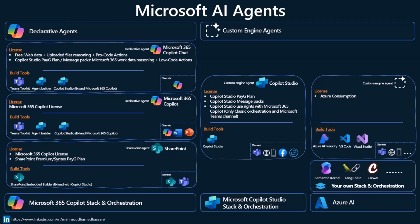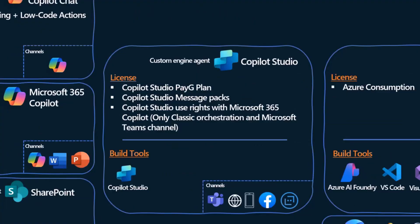The first place you land for custom engine agents is Copilot Studio, and everything we discussed about declarative agent licensing applies here too: pay-as-you-go plan, message packs, and a seeded license experience with M365 Copilot. The build tool is Copilot Studio. From a channel perspective, you can publish to many channels: Teams, web, mobile, and Facebook, plus Azure Bot Service for others. Also, WhatsApp and SMS via Azure Communication Service integration with Copilot Studio is coming this year.